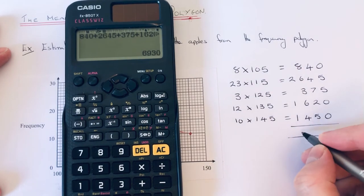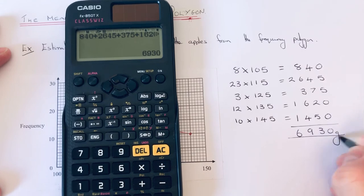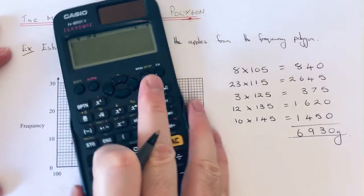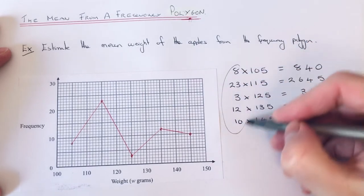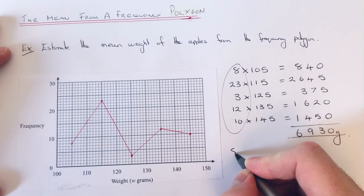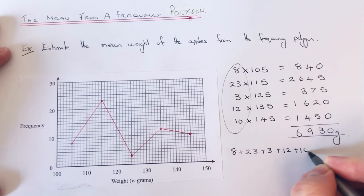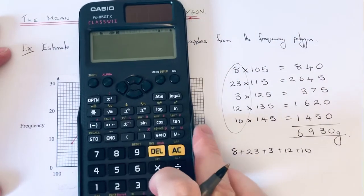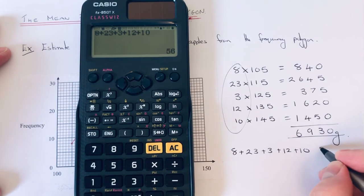The total weight is 6930 grams. The next thing to do is work out how many apples we had altogether, the total of all the frequencies.